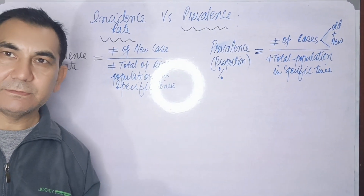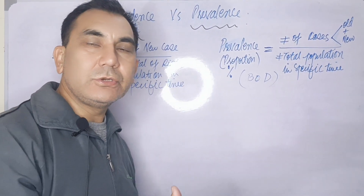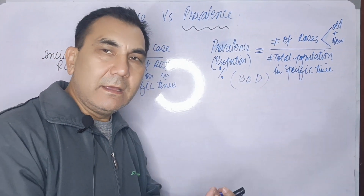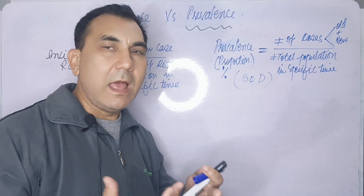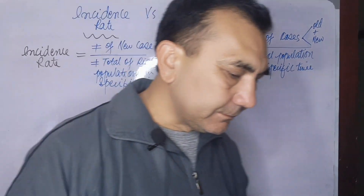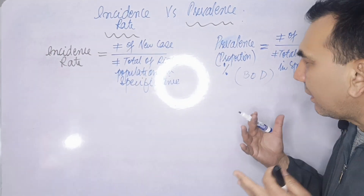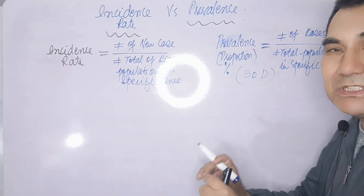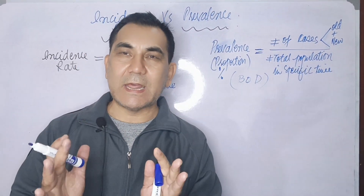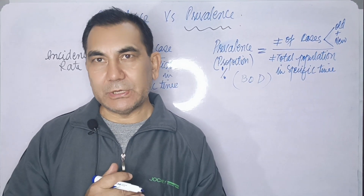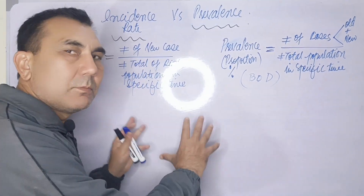Prevalence is also called the burden of disease, abbreviated as BOD. When we say 'burden of disease,' we mean the prevalence — for example, what is the prevalence of diabetes mellitus, what is the prevalence of hepatitis B and C, or what is the percentage of STIs in our community. Prevalence represents the magnitude of disease and is always expressed as a proportion or percentage.